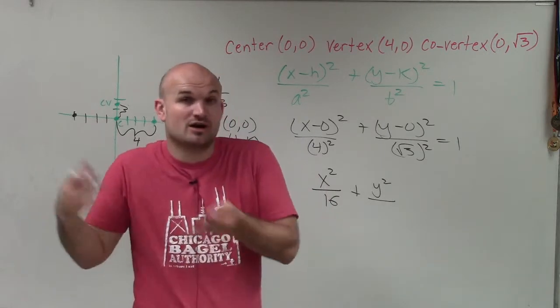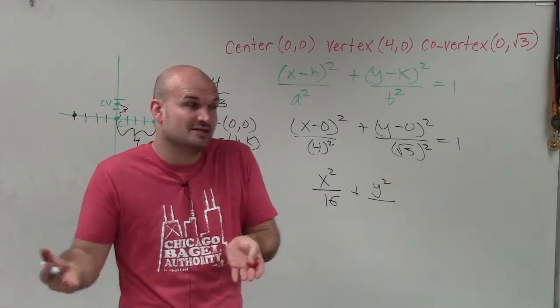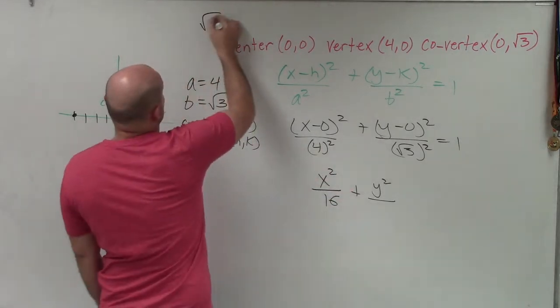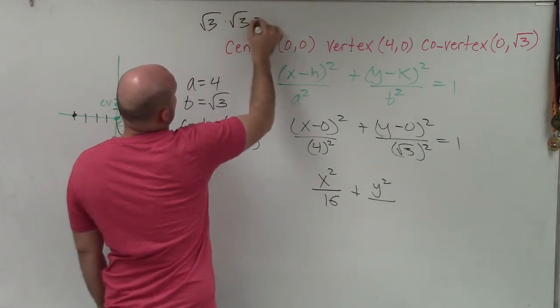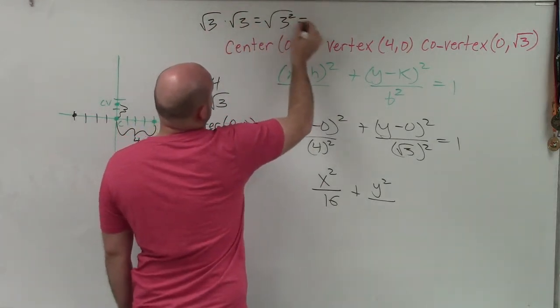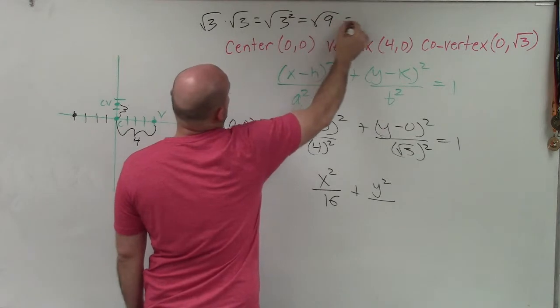Remember, the square root and the square undo each other - they're opposite operations. √3 times √3 equals (√3)² = √9 = 3.